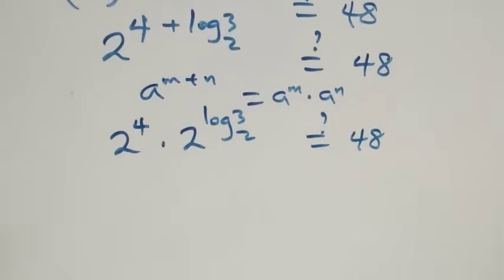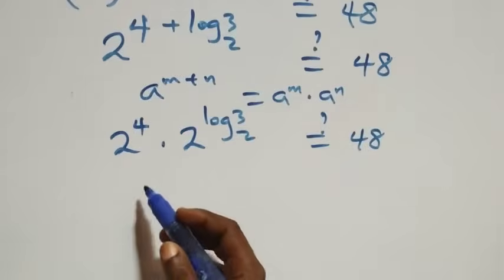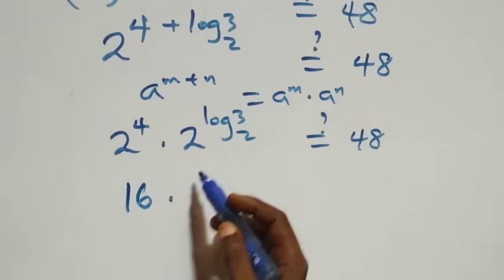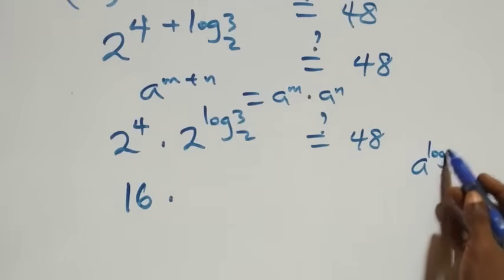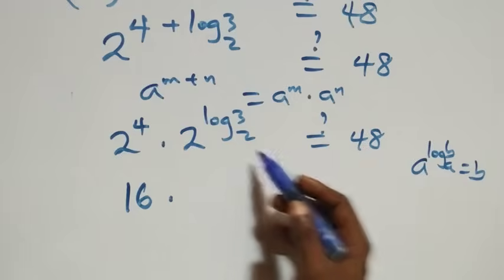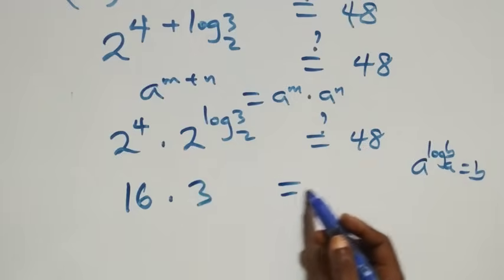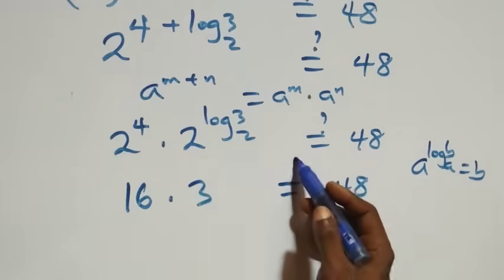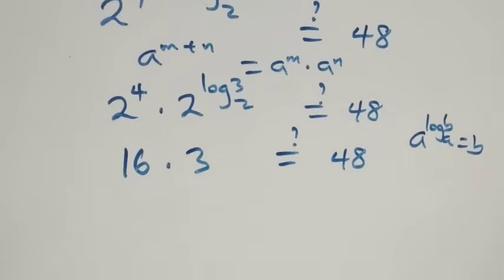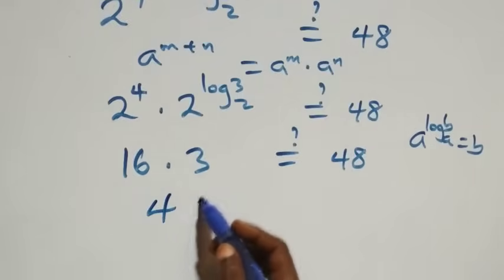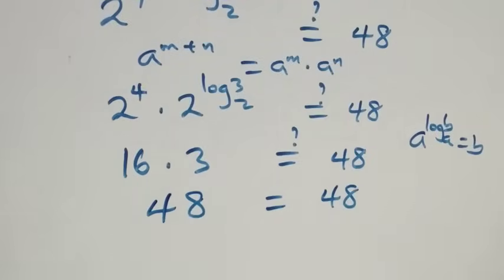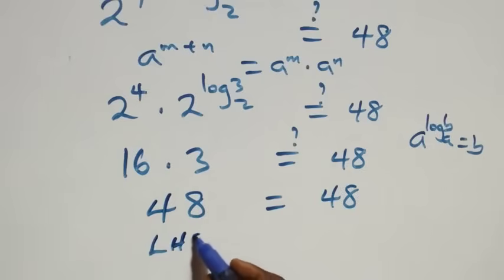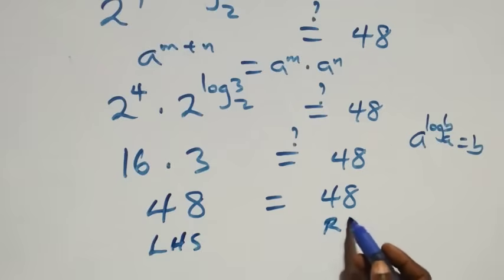Now, 2 raised to power 4 equals 16. And applying the identity a raised to power log_a(b) equals b, we get 2 raised to power log₂3 equals 3. Therefore 16 times 3 equals 48, which equals 48 on the right-hand side.